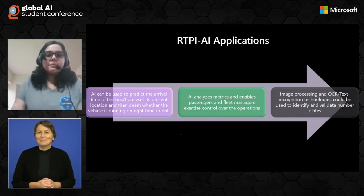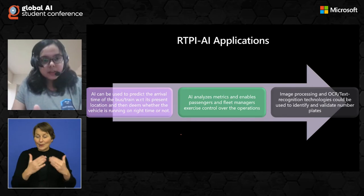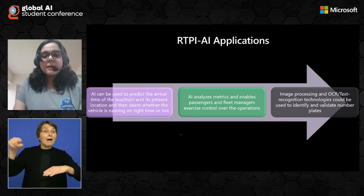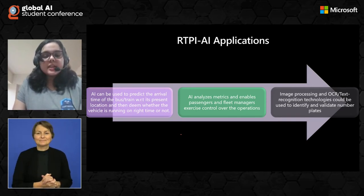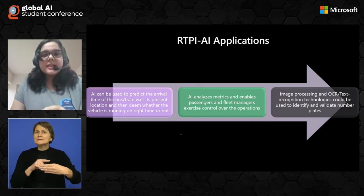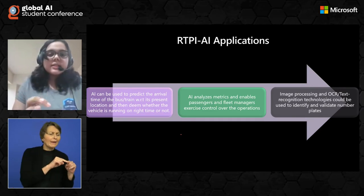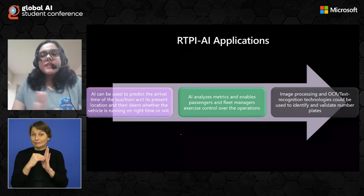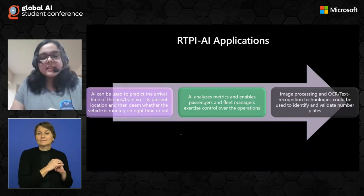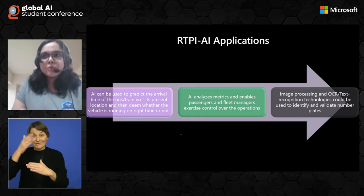Looking at AI applications of RTPI: AI can be used to predict the arrival time of the bus or train with respect to its present location and decide whether the vehicle is running on the right time or not. For example, if the bus reached its designated destination at the right time in a previous trip, AI would use that data — noting that at particular point X, it was Y minutes away from reaching its destination. If at point X it was running on time, it would still take Y minutes, but traffic and other factors would have to be taken into account as well.